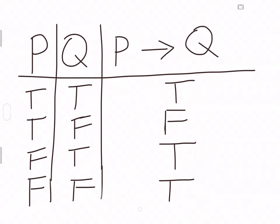In this video I want to convince you that the definition of the conditional statement p implies q is correct. Here is that definition, and here is the point of contention — students often think that these two rows should be false, not true. The point of this video is to convince you that no, in fact they should be true.